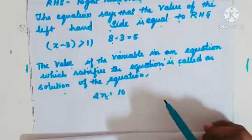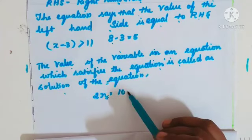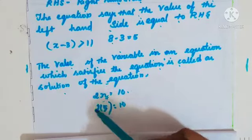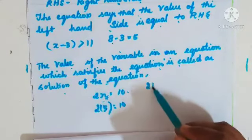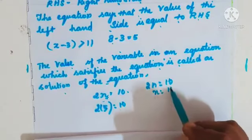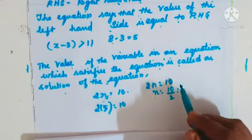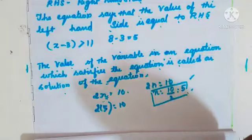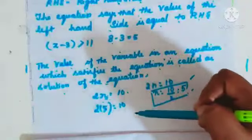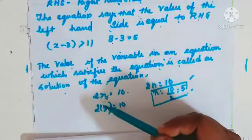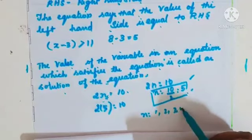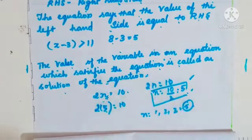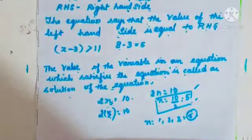To solve 2n = 10, put n = 1, 2, 3, 4... and check which value makes LHS equal RHS. Only n = 5 will satisfy. Take Exercise 11.5 from page 238. x + 20 = 70 has variable x — that's an equation. 8 into 3 = 24 is a numerical expression, not an equation. 2p > 30 has no equal sign, so not an equation. n minus 4 = 100 has a variable and equal sign, so it's an equation.